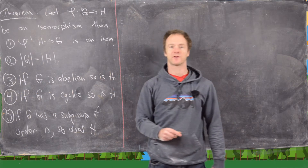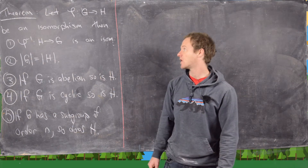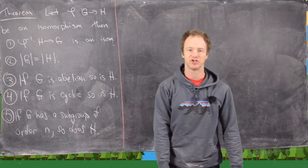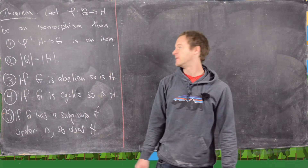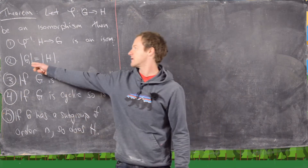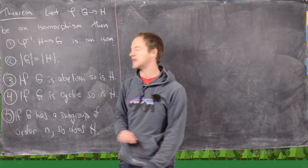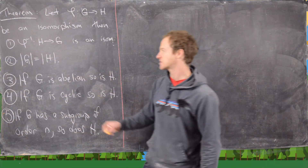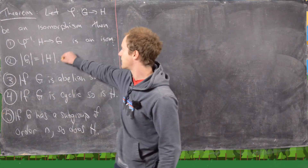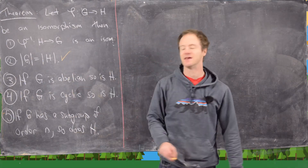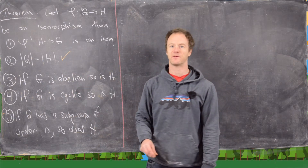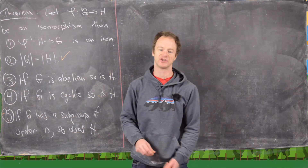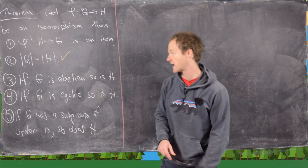First, phi inverse is also an isomorphism and that goes from H to G. Second, the number of elements in G is equal to the number of elements in H. We're not going to prove that — it follows immediately from the fact that an isomorphism is a bijection.